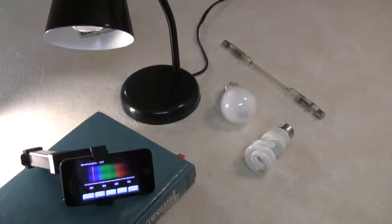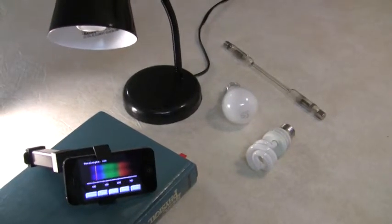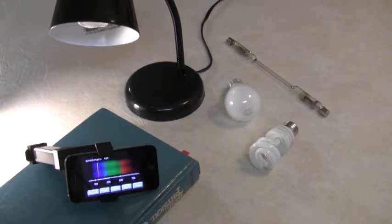A fluorescent bulb is used to produce line emission spectra and is used to calibrate the scope.